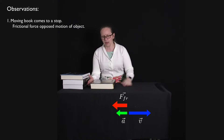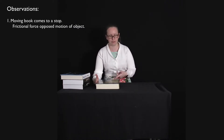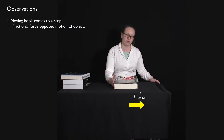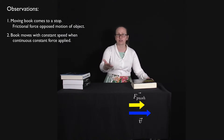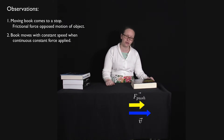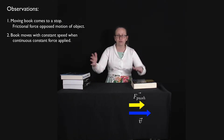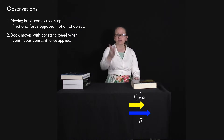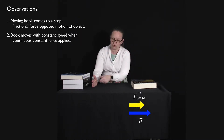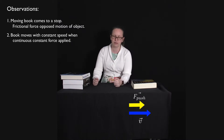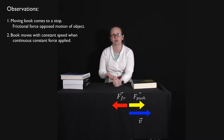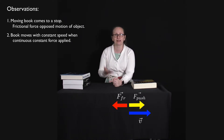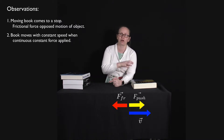Observation number two: if I push this book with a constant force, I can make it move along the table top at a constant speed. If it's moving at constant velocity, we know there's no net force acting upon it — that's Newton's first law. There's a push force in this direction, so there had to be an equal and opposite frictional force opposing that motion. Once again, the frictional force was in the opposite direction to the motion of the book.